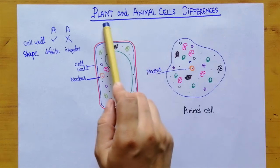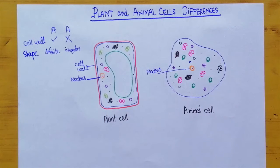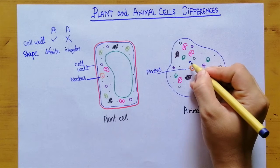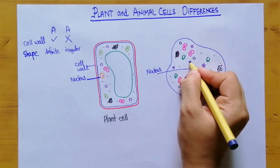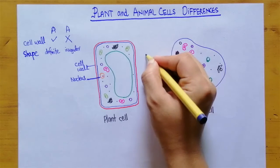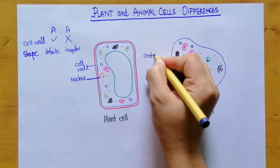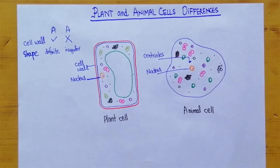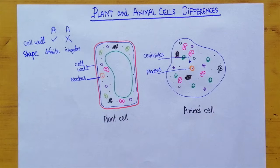Then comes another cell organelle which is present only in animal cells, known as centrioles. This part here represents the centrioles, which in the case of plant cells is absent.